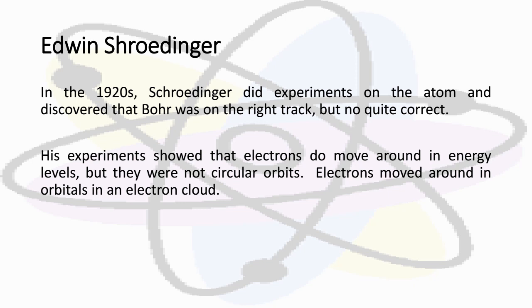Along came Edwin Schrodinger. In the 1920s, Schrodinger did experiments on the atom and discovered that Bohr was on the right track, but not quite correct. His experiments showed that electrons do move around in energy levels, but they are not circular orbits. Electrons move around in orbitals in an electron cloud.